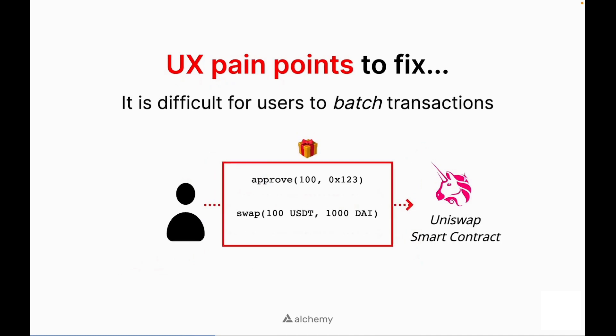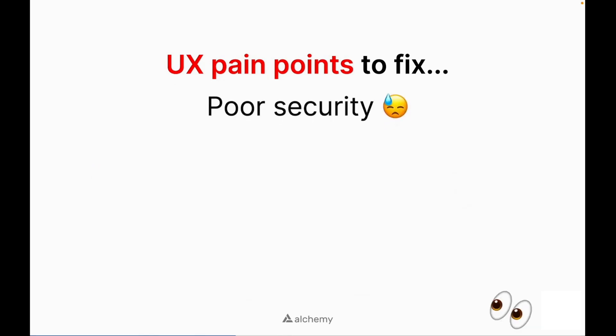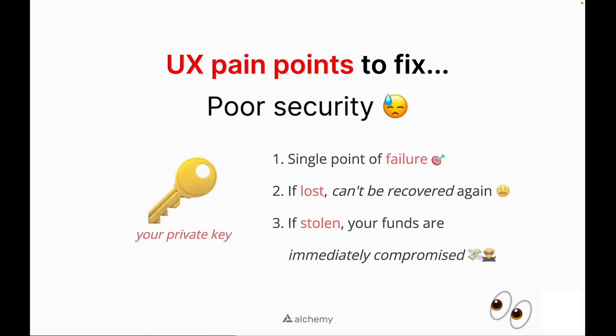It is difficult for users to batch transactions. We are still at the point where a simple token swap on Uniswap requires multiple transactions and numerous clicks. Lastly, and probably the most important UX pain point to fix, is poor security. Your private key essentially acts as a single point of failure. If lost, it can't be recovered again, and if stolen,